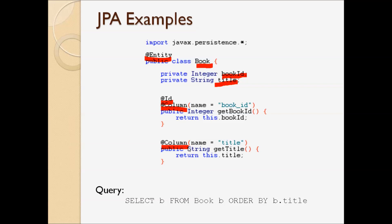This is a simple JPQL query: SELECT b FROM Book b ORDER BY b.title. You see it looks very similar to SQL, but notice the object-oriented syntax with b.title. This query retrieves all books and sorts them by title in ascending order. The Book here is not a table in the database — instead, it is the Book entity class. So that gives you an overview about JPA.